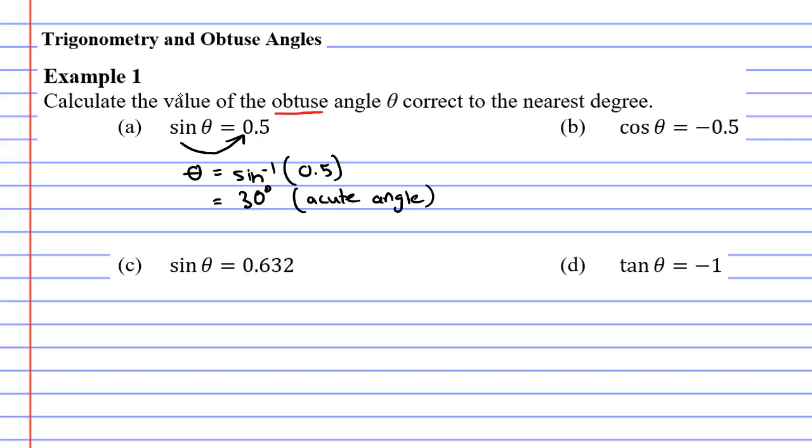It asked for an obtuse angle. So how do we do that? Well you might notice that if I have the angle of 30 degrees and I add it to the angle of 150 degrees that I get 180 degrees. 30 and 150 are supplementary angles.